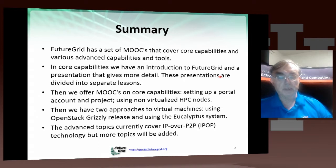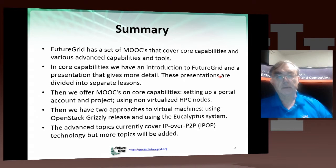These core capabilities are supplemented by advanced topics. Currently we have one on the IPOP system — IP over P2P — which can be used by FutureGrid projects. We will add more topics in this advanced area, including capabilities such as Hadoop and MapReduce, MPI, and things like that.